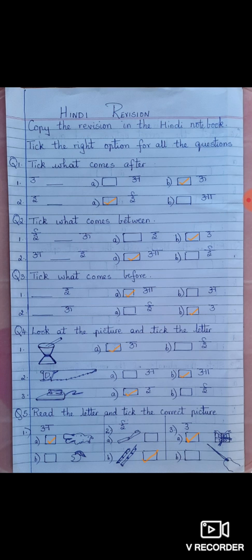Question 4 Look at the picture and tick the letter. Now look at the picture. What is the picture telling you? That it is UKHAL. So UKHAL starts with the letter OO. So you will tick option A which is OO.